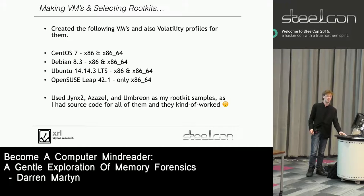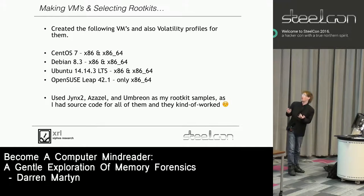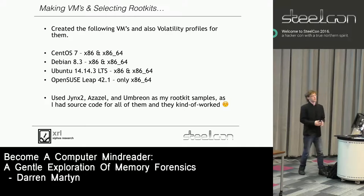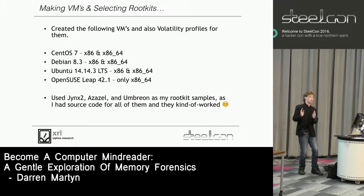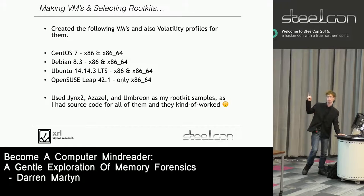Jinx2 has like a million problems. Azazel is a massive flaming pile of shit. And Umbreon was written by somebody who thinks that Ctrl+C and Ctrl+V is how you program. So if you're listening, Starfall, you need to learn how to actually code because your rootkit is terrible and it breaks boxes it gets installed on. It's really easy to detect because if your computer suddenly stops working, you've probably got one of these on it.